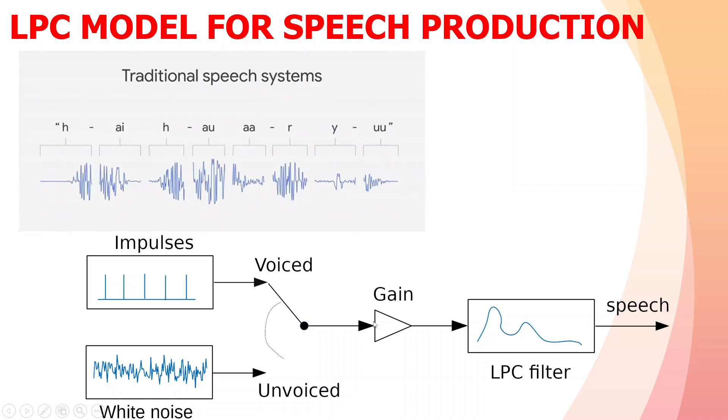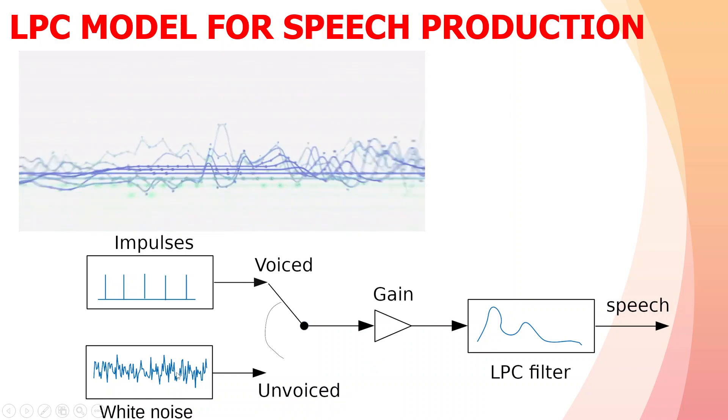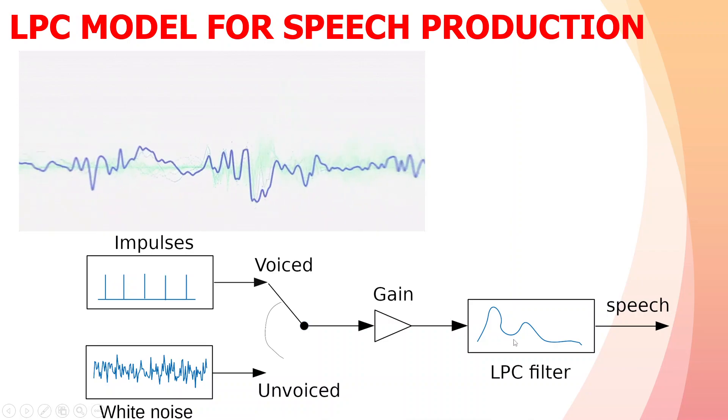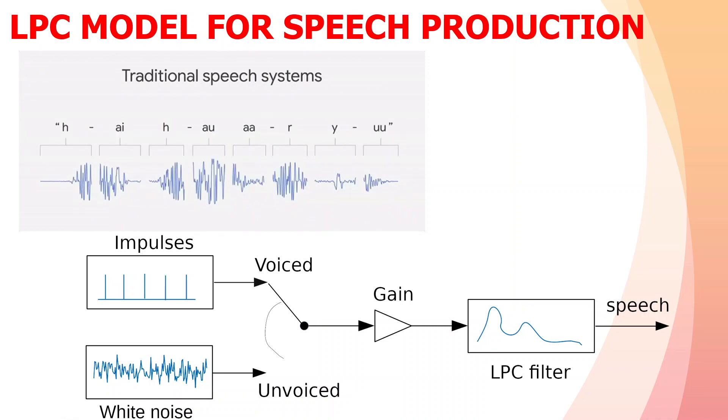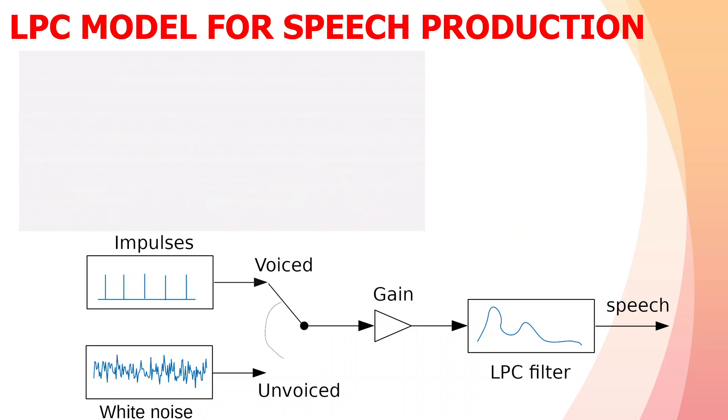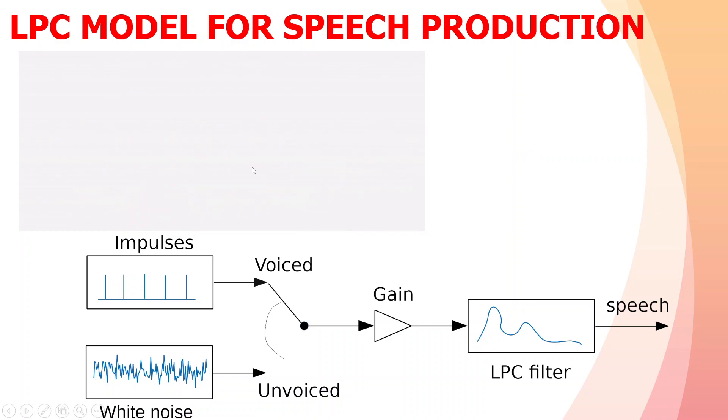For voiced signals, the amplifier is excited with impulses. For unvoiced, the amplifier is excited with white noise. The LPC filter is based upon the features of the voice, like pitch period. We will construct the LPC filter coefficients for generation of speech.